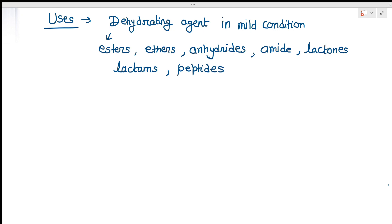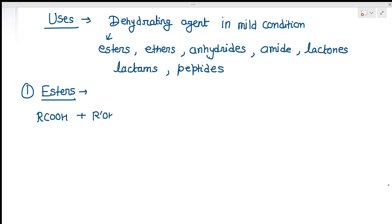First, for esterification: acids and alcohols react together to form an ester, and this reaction can be done very easily with DCC. R-COOH (acid) and R'-OH (alcohol) are reacted in the presence of DCC so that they form R-COO-R'.